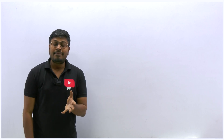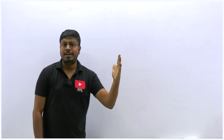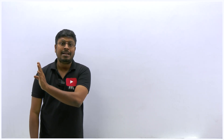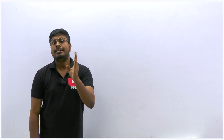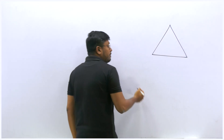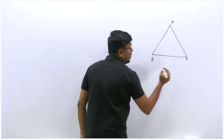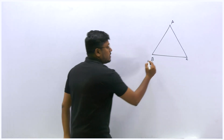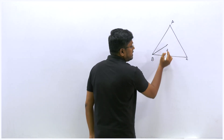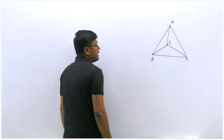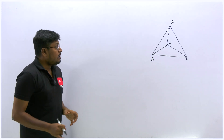In the previous video I explained the difference between centroid, incenter, and circumcenter. When we draw a median we get a centroid; when we draw an angle bisector we get an incenter; and a perpendicular bisector gives us a circumcenter. For the incenter, we draw angle bisectors from A, B, and C — their joining point is called the incenter.